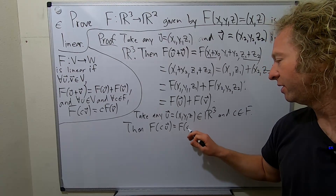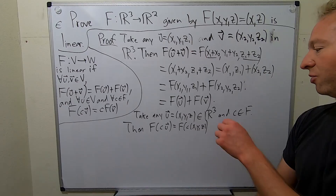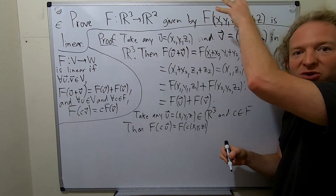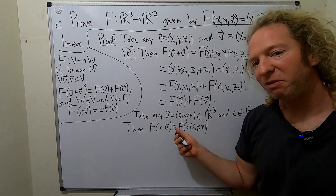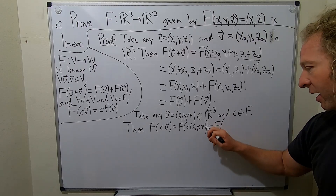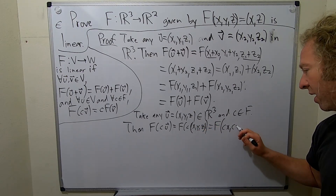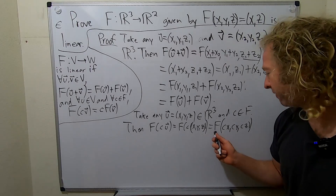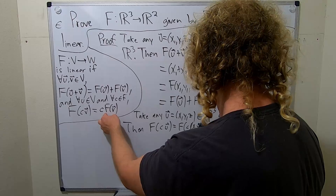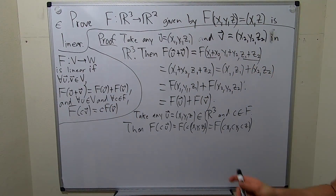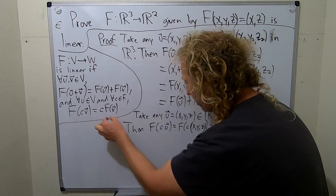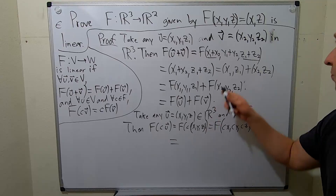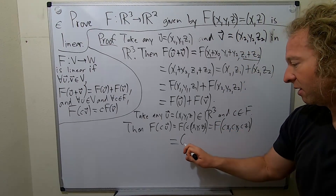So this is f of c times (x, y, z) — you can see the parentheses there. You can distribute the c, so this is f of (cx, cy, cz). Now we apply the definition of f: f maps (x, y, z) to (x, z), so this is (cx, cz). We have to show that we can pull this c out.